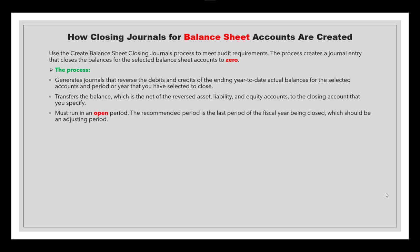You must run this process in an open period. The recommended period is the last period of the fiscal year being closed, which should be an adjusting period. During the fiscal calendar, you should consider one, two, three, or quarterly adjusting periods. Oracle recommends running this process in the adjusting period — and if you have more than one adjusting period, it's better to run it in the last adjusting period in your calendar. Using an adjusting period is recommended to avoid large balance fluctuations in your standard accounting periods.